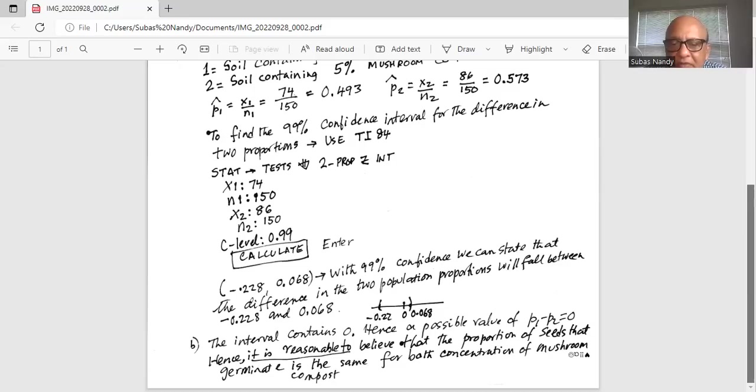Hence the possible value of p1 minus p2 is 0, which means p1 could be equal to p2. Hence it is reasonable to believe that the proportion of seeds that germinate is same for both concentrations of mushroom compost because 0 is a possible value of the difference between p1 minus p2. That is, there is no difference between the two mushroom compost concentrations in terms of seed germination.